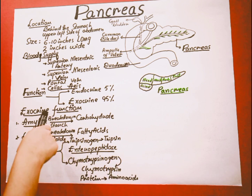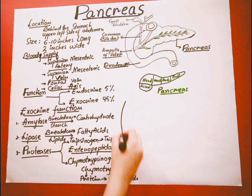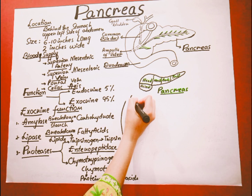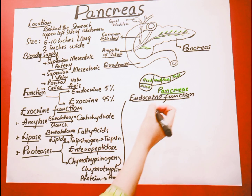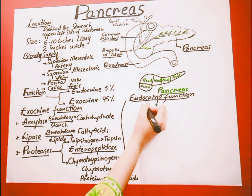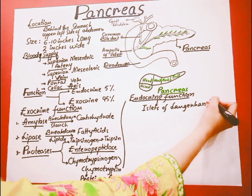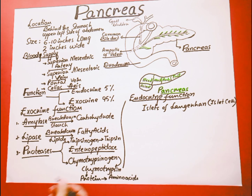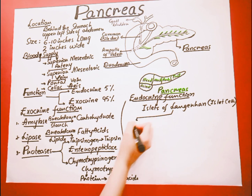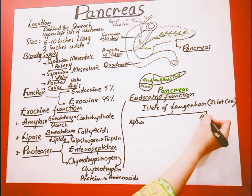So this is the exocrine function of the pancreas. Let's move to the endocrine function of this gland. For the endocrine function, the pancreas contains some specialized cells called the Islets of Langerhans, also called islet cells. These islet cells are of two types: alpha islet cells and beta islet cells.